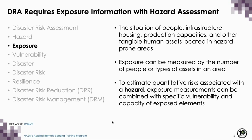For actual disaster risk assessment, in addition to hazard assessment, we have to have exposure and vulnerability information. Exposure is the situation of people, infrastructure, housing, and other tangible human assets located in hazard-prone areas. Exposure can be measured by number of people — by gender, class, and age. To estimate quantitative risk, exposure measurements can be combined with specific vulnerability and capacity of exposed elements.